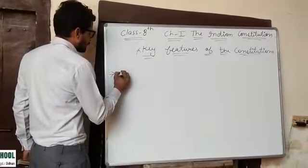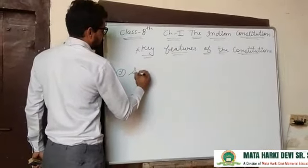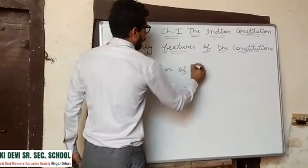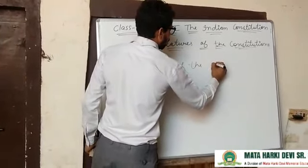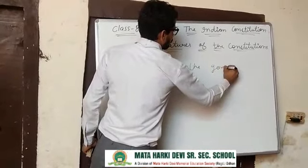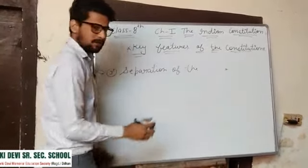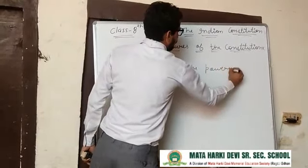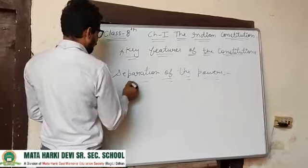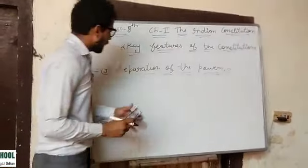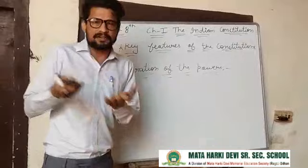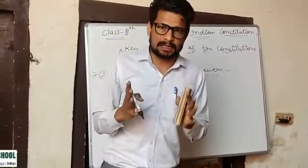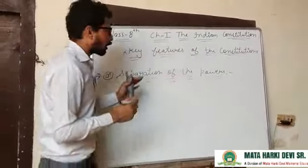The third key feature is separation of powers. In this part we discuss the different powers given to the legislature, the executive, and the judiciary. According to the Constitution, all powers are distributed among the different organs of the government.